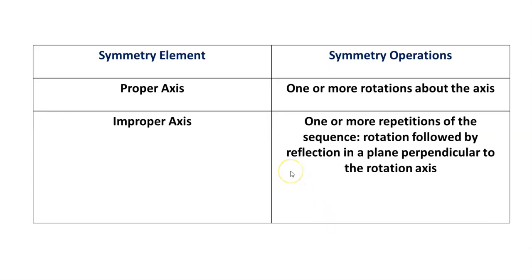The other two symmetry elements are the proper axis and the improper axis. These involve rotations — the improper axis involves rotations followed by reflections.